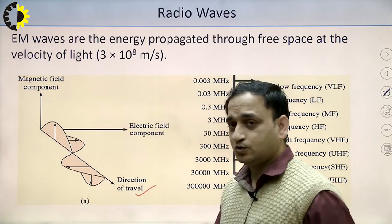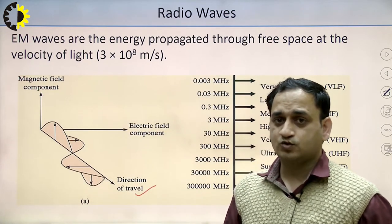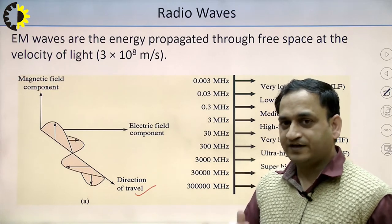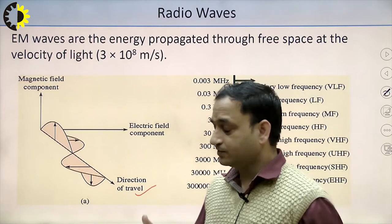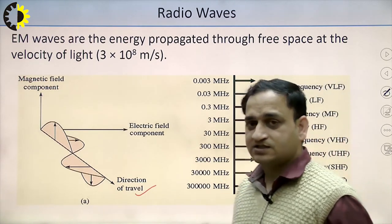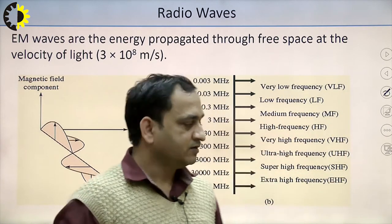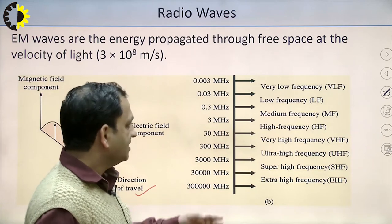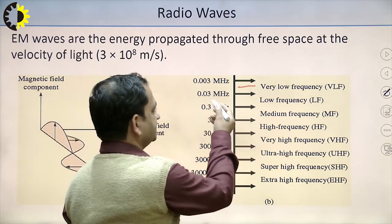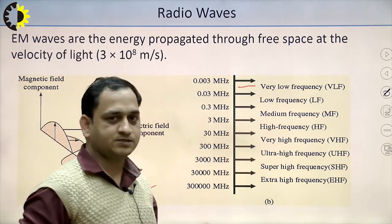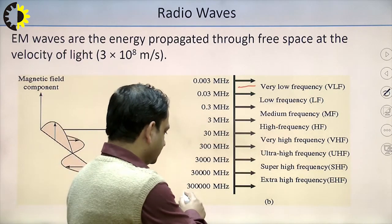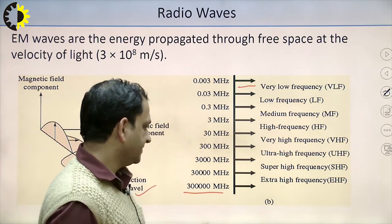The EM wave also propagates from transmitter to receiver through different frequency levels. These frequency levels range starting from very low frequency, with a range of 0.003 MHz up to approximately 30,000 MHz, which is above the extra high frequency (EHF) range.